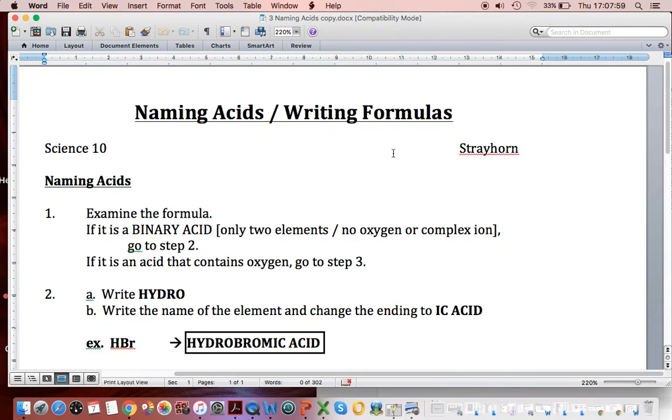When you're naming acids, you have to look at the formula. First of all, you've established an acid, usually with an H at the front end. And what you have to do is decide, is it a binary acid? Does it just have hydrogen and a non-metal? Or does it have hydrogen and a complex ion? If it has hydrogen and just a non-metal, then it's binary. If it has hydrogen and a complex ion, then it's not binary. If it's a binary acid, go to step two. If it has a complex ion, we're going to go to step three.